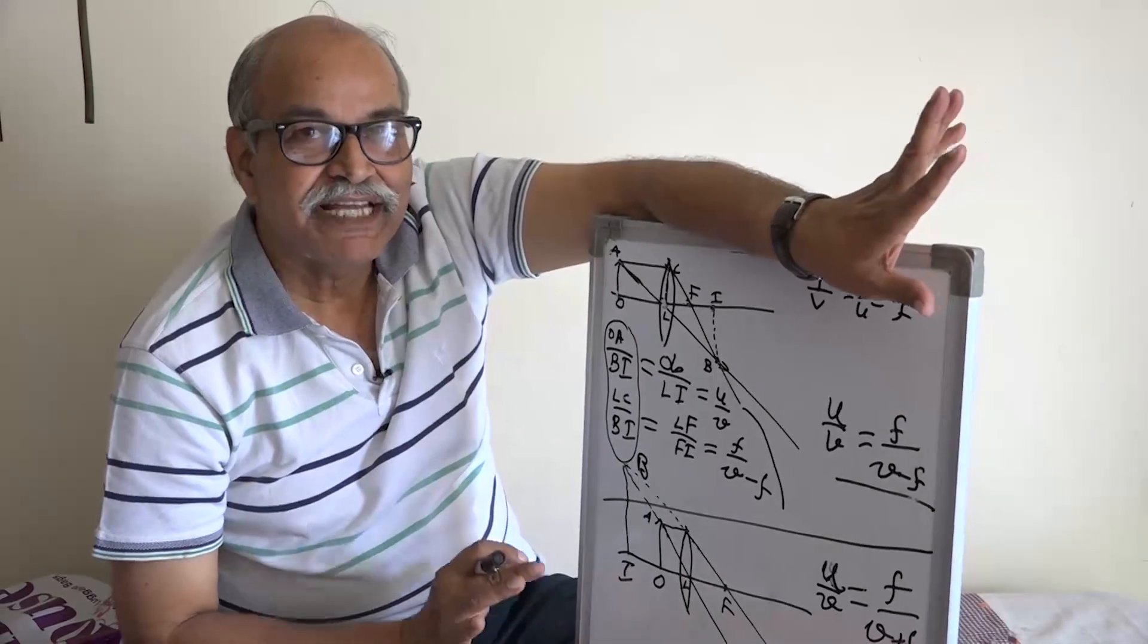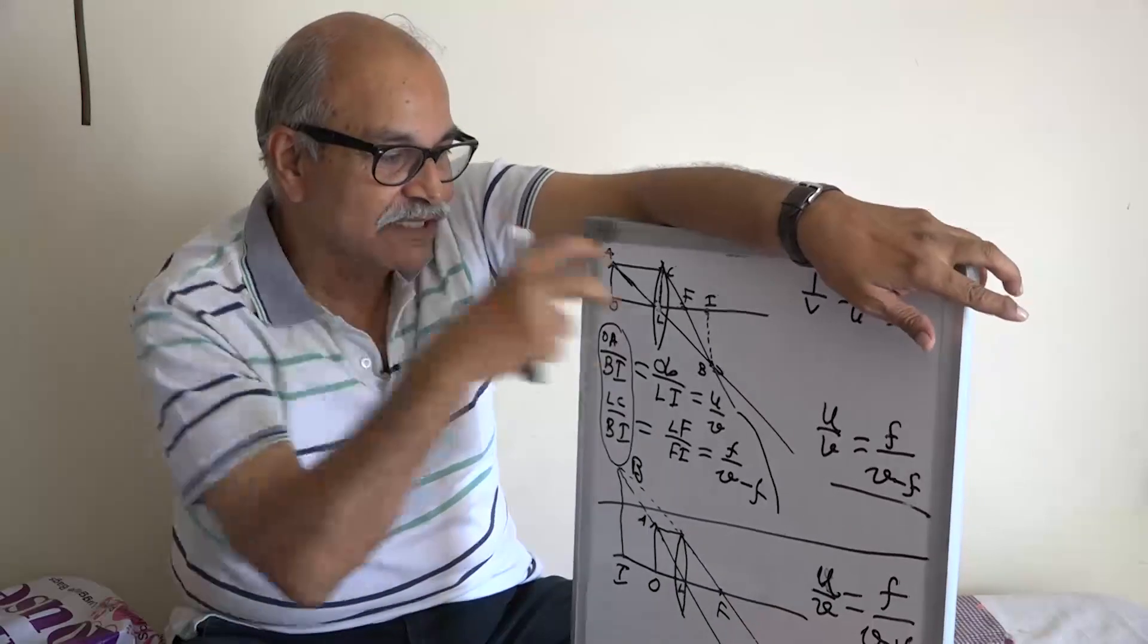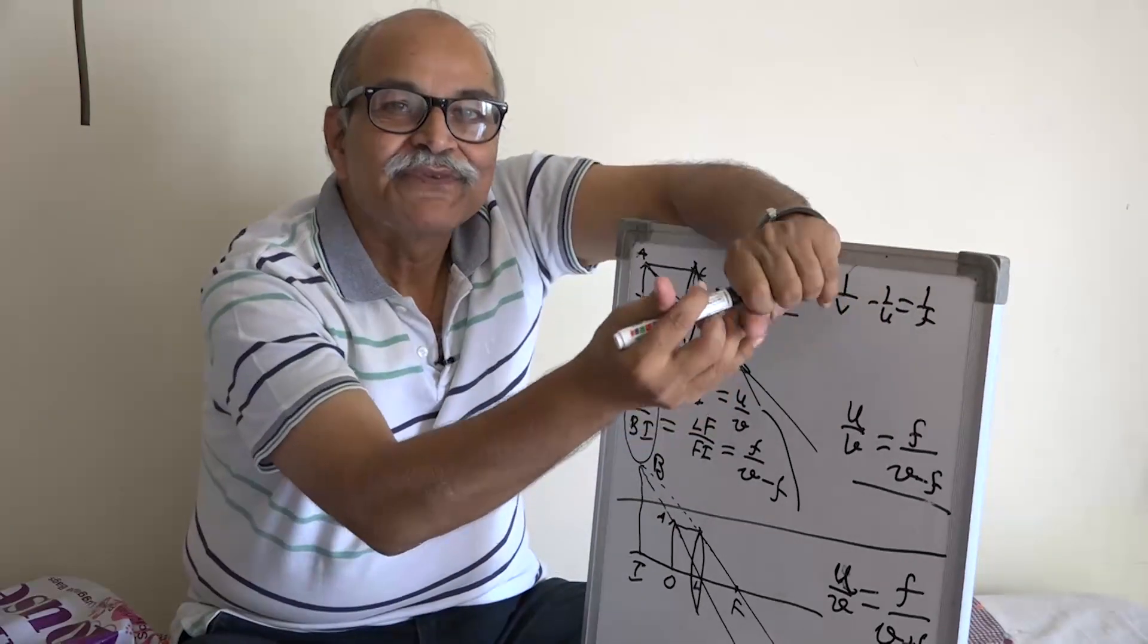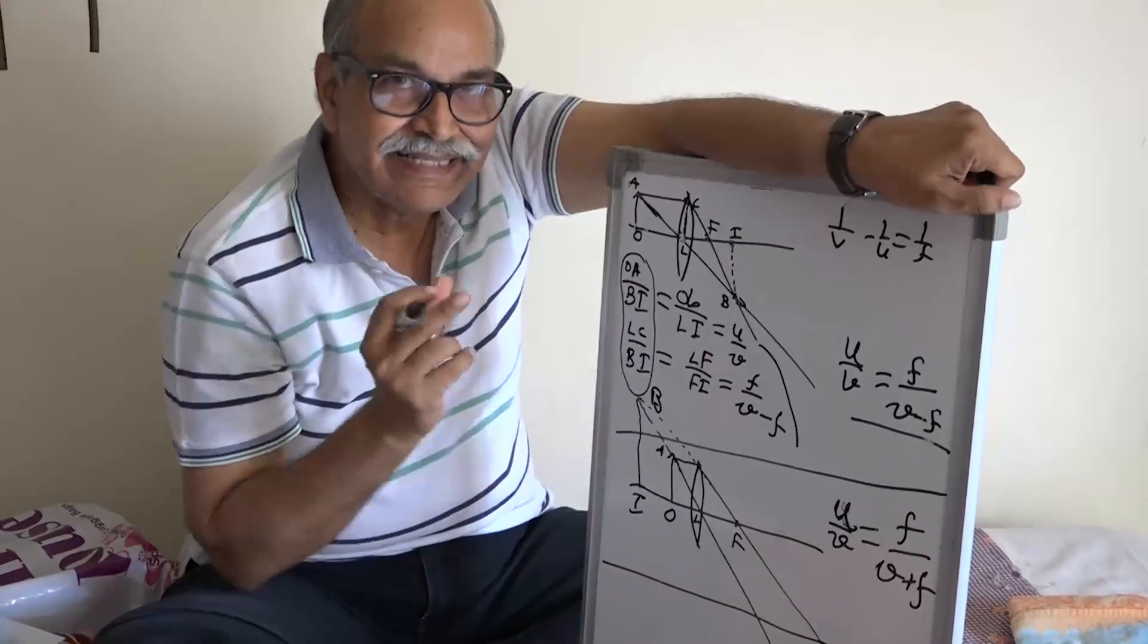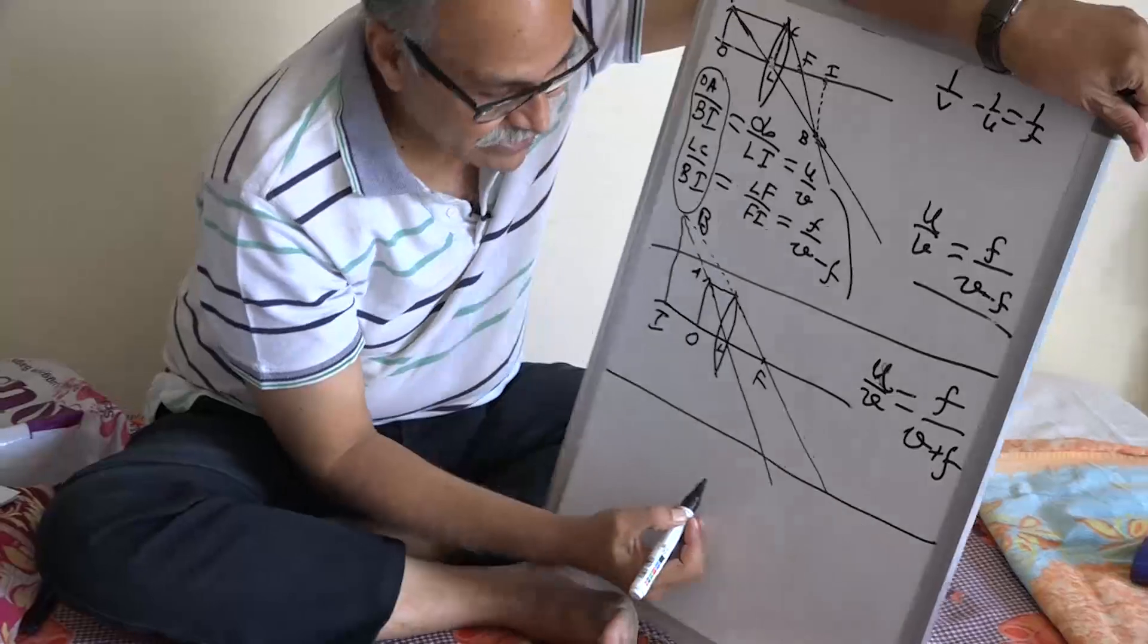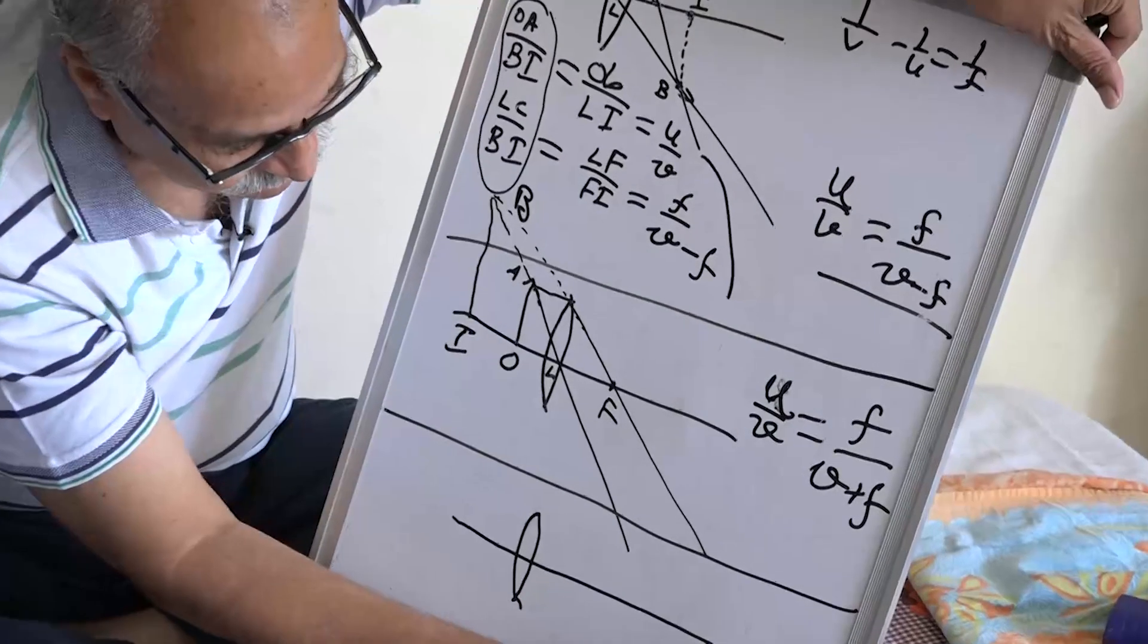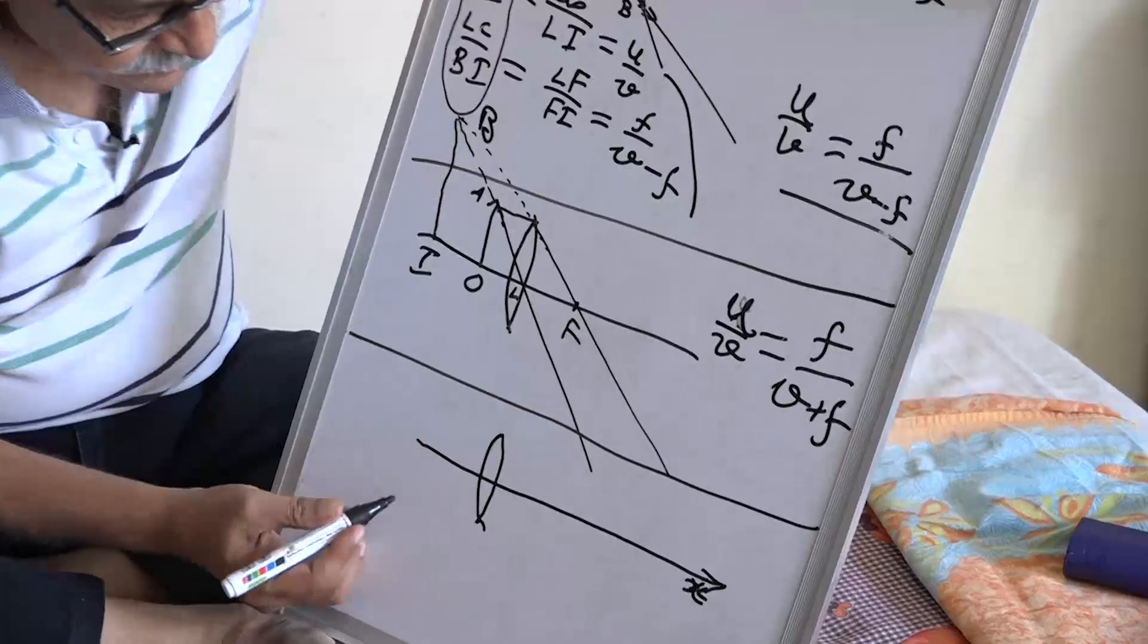In order to make our life simpler and not to remember too many things, that if this is the situation then this is the formula and this is the situation then this is the formula, what we do is we write our equations not in terms of the distances but in terms of the coordinates.